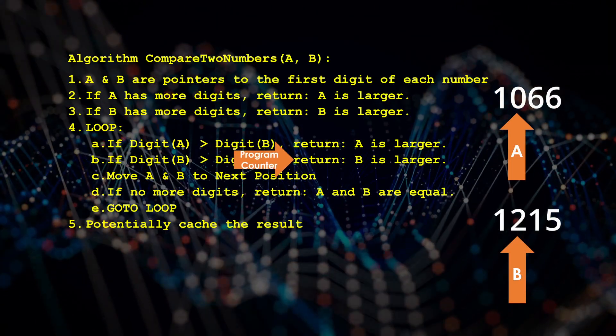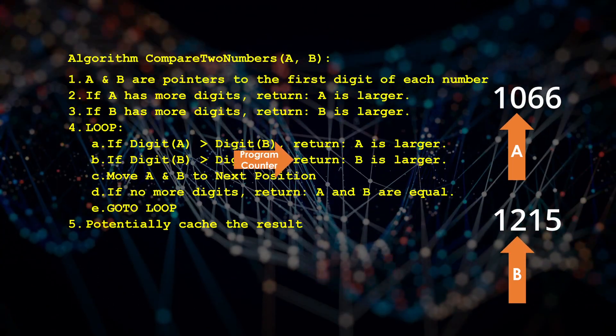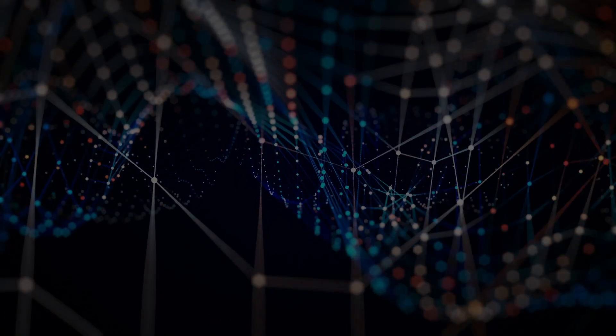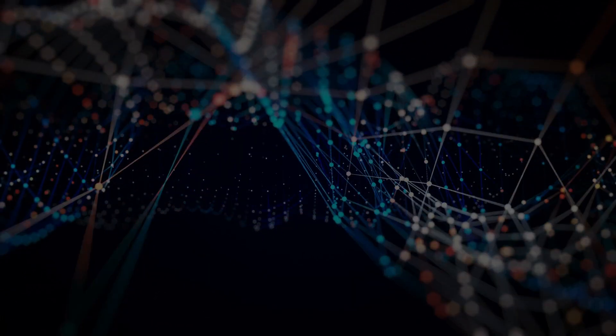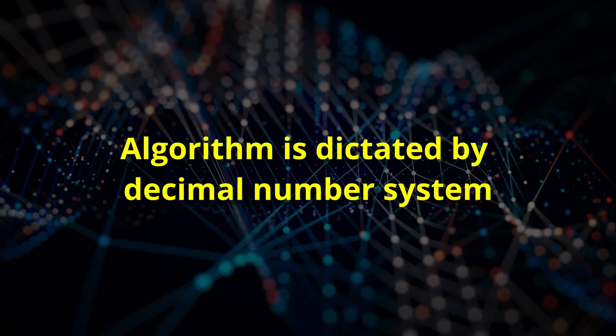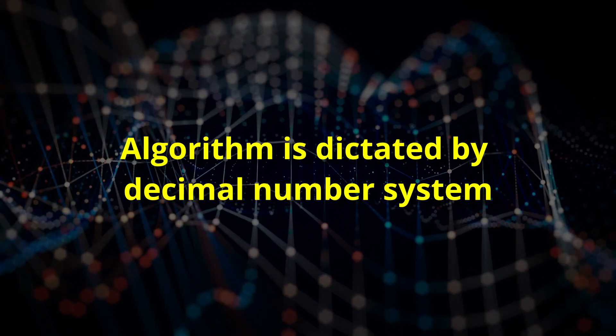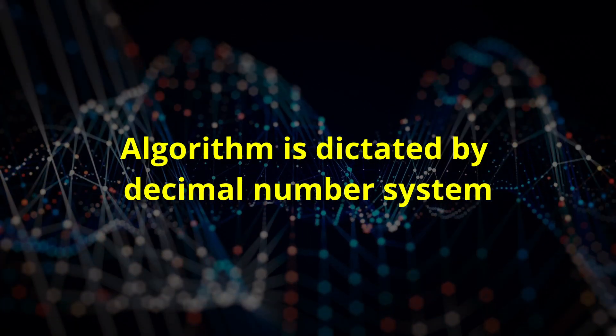This time the digit pointed to by B is greater than the digit pointed to by A, so we return the result that B is larger. As a final note, potentially we cache the result. There are many variations on this theme which would yield the desired result, but conceptually the algorithm is more or less dictated by our decimal number system.